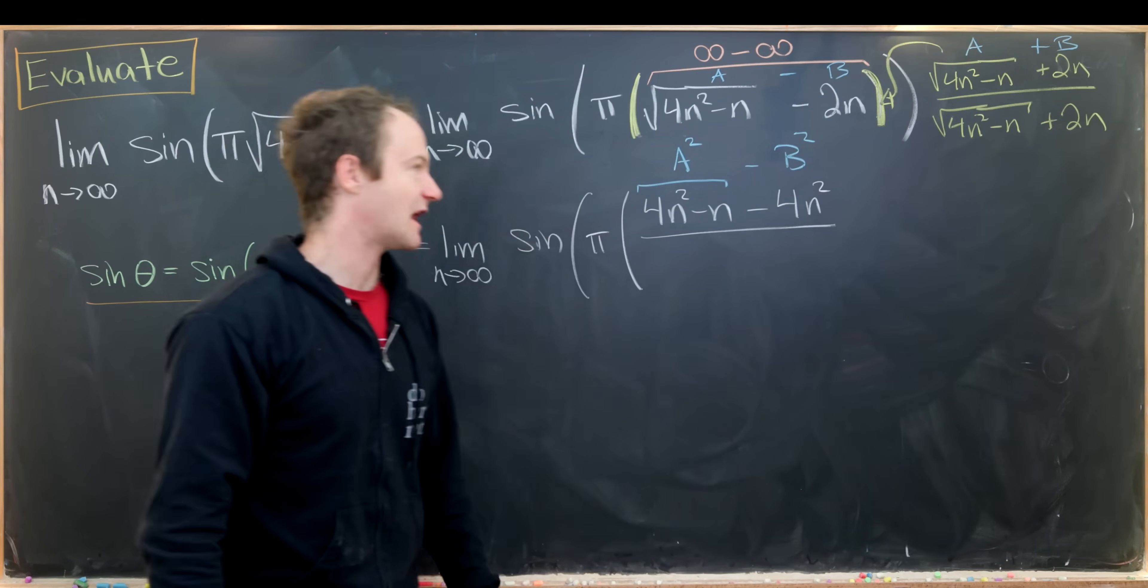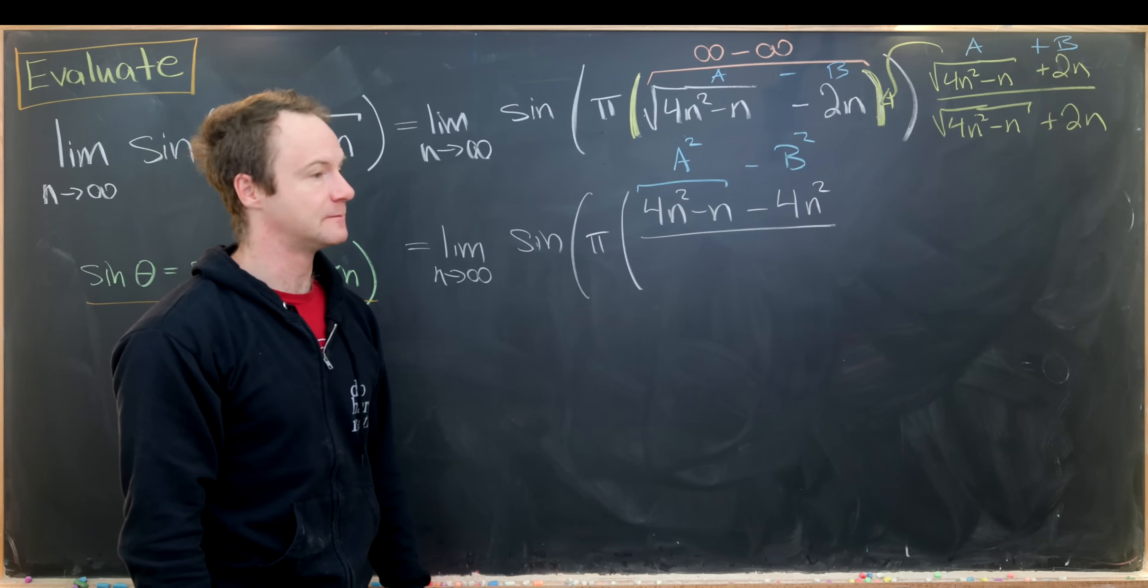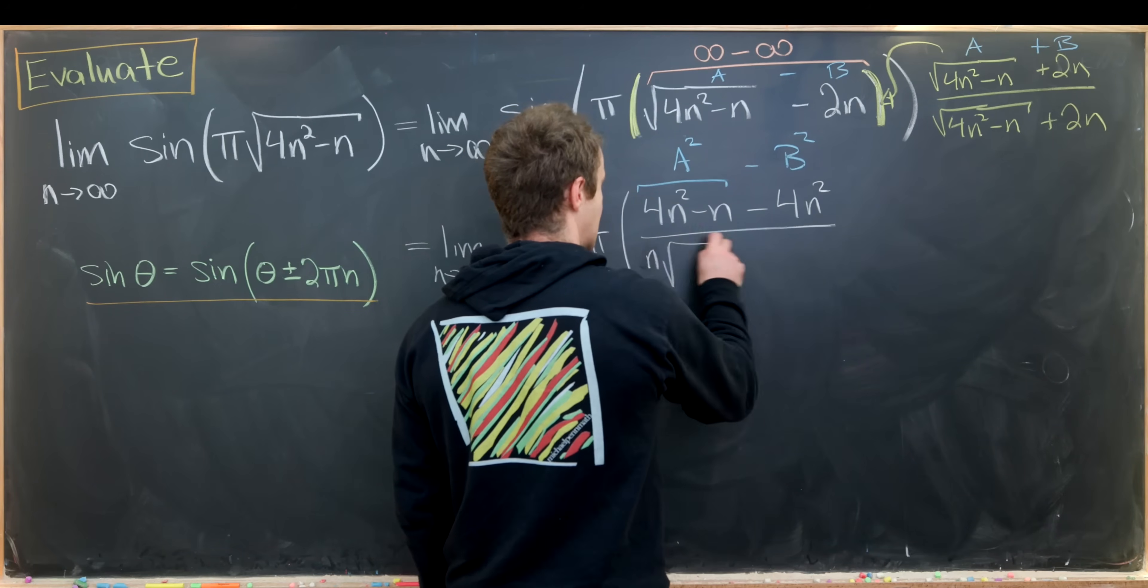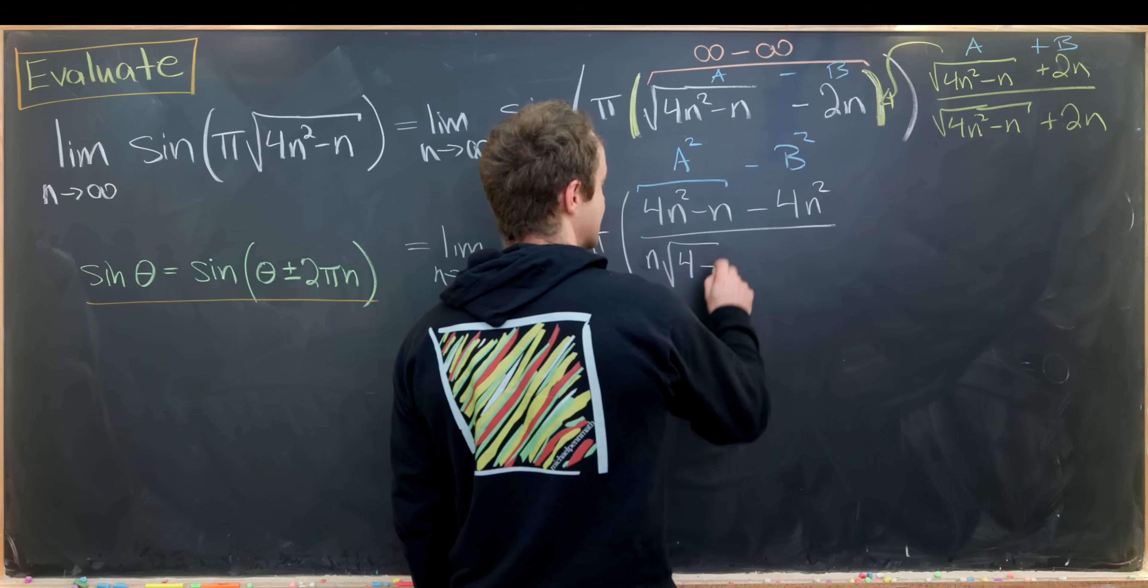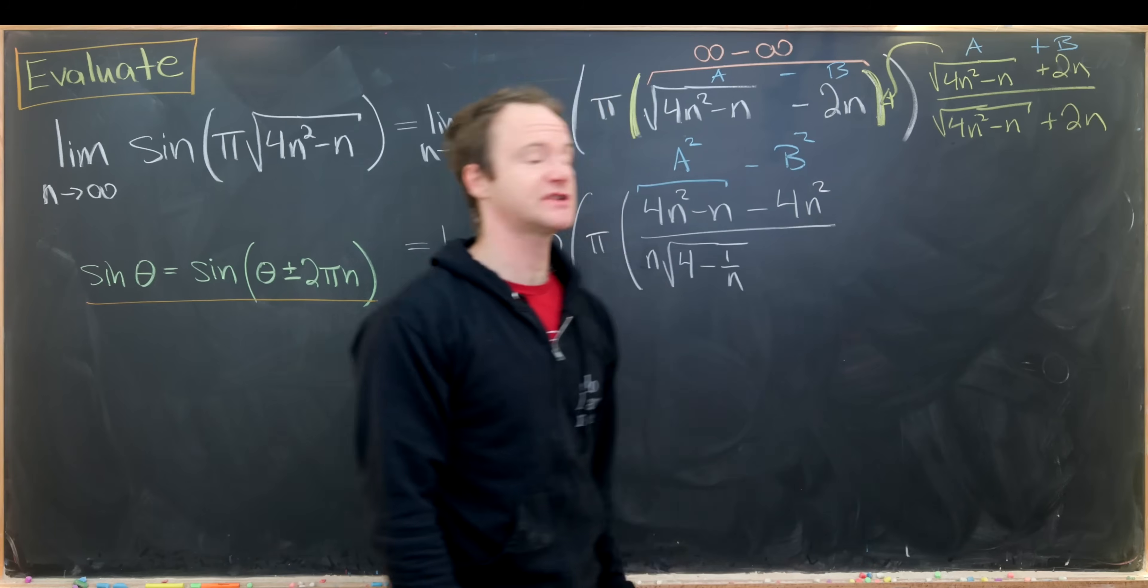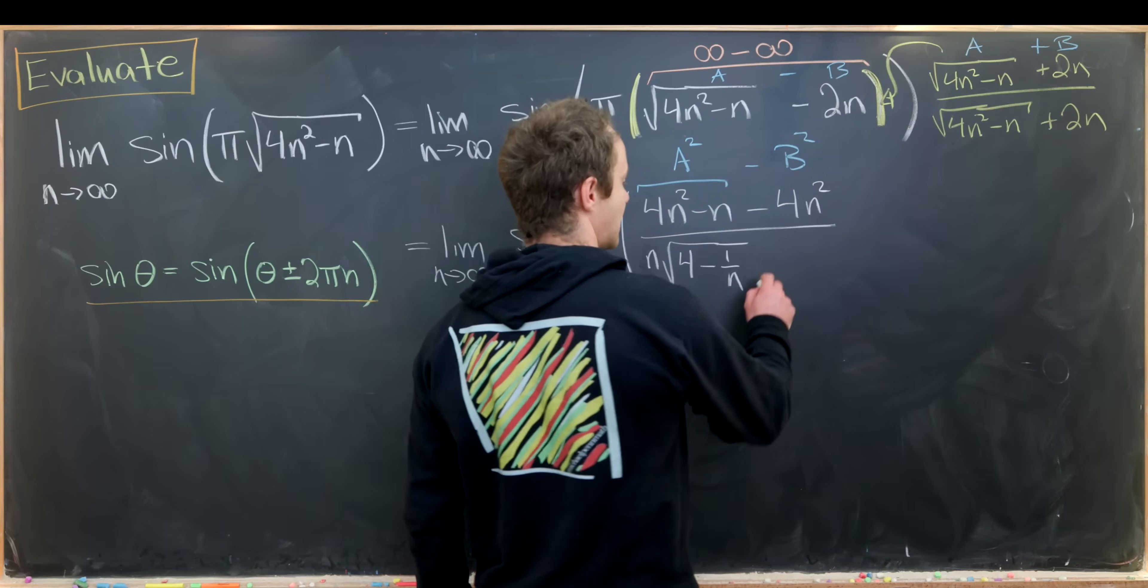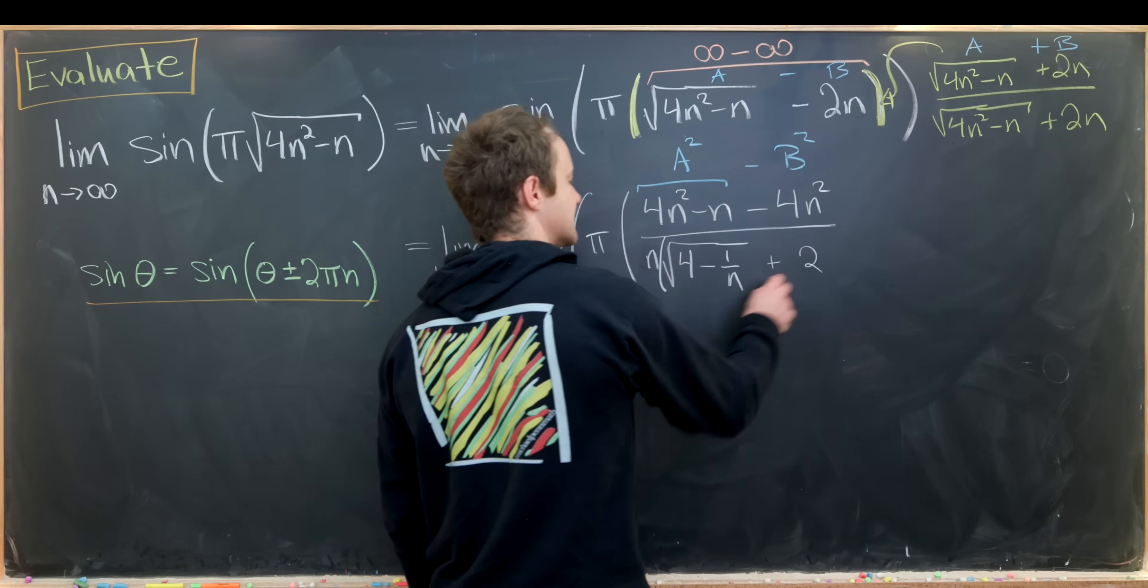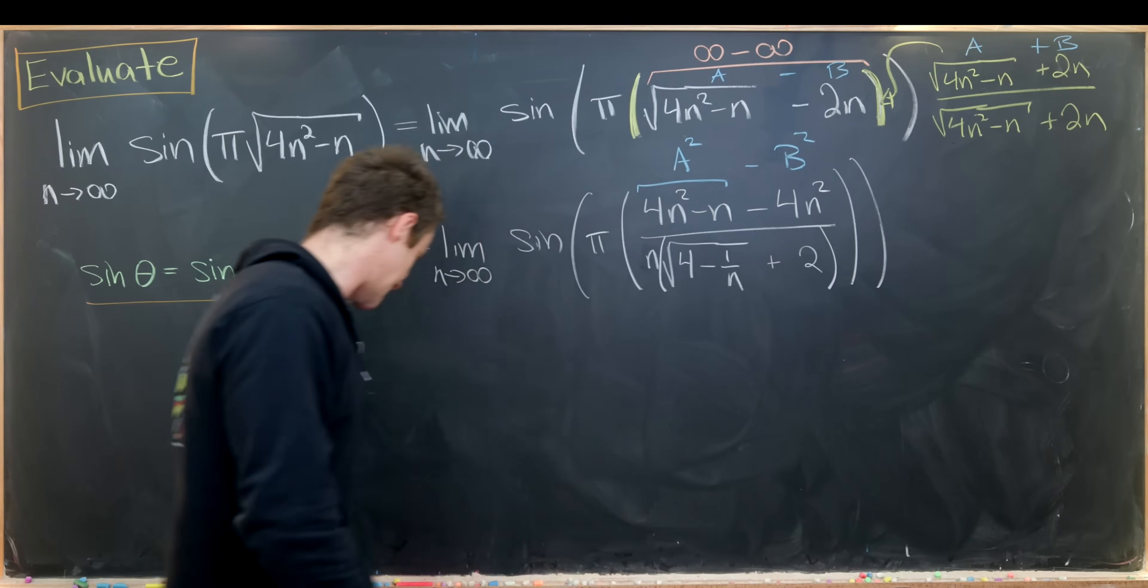Now I'll take this denominator and I'll factor an n out of it. That's going to give me something like n times the square root of 4 minus 1 over n. So that's what I get from factoring n out of this first term. Notice it's like factoring an n squared out of the terms under the square root. And then I'll have this is all plus 2. So that's maybe a simplification of what I've got now. And now I can start canceling a little bit.